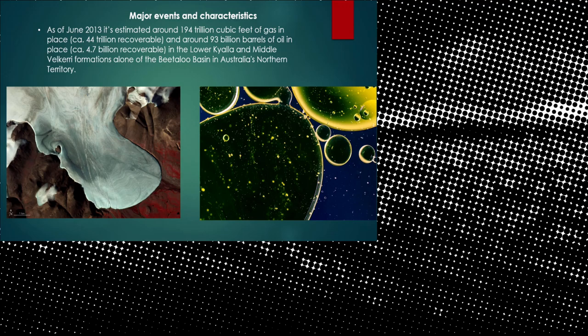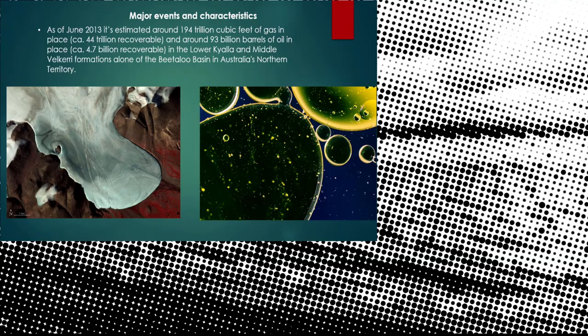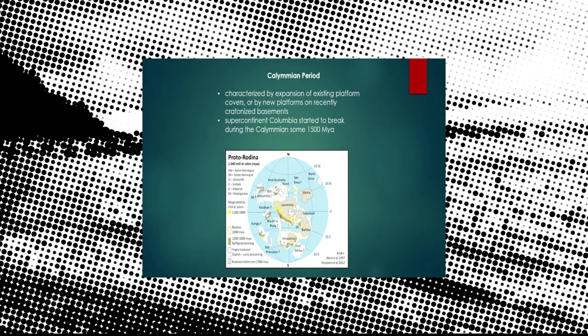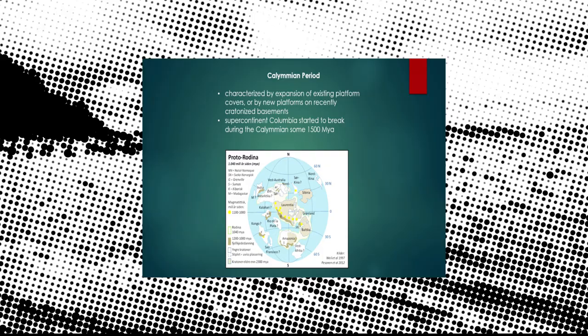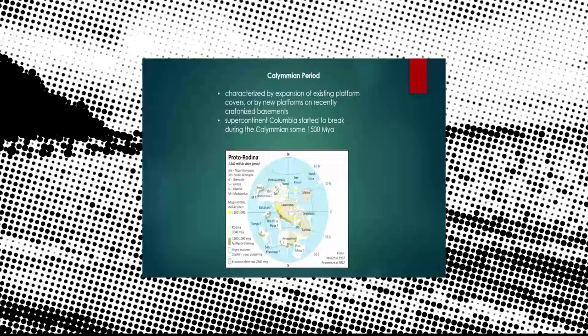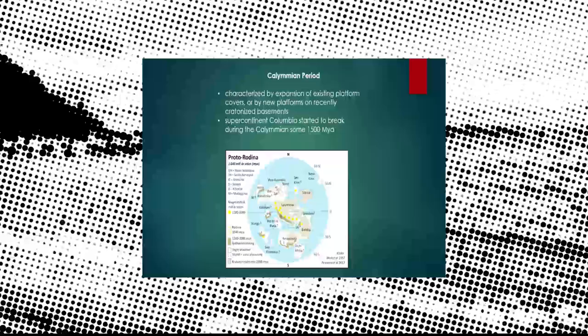There are three periods that reside in the Mesoproterozoic Era. The first one is the Calymmian Period. It's characterized by the expansion of existing platform covers or by new platforms on recently cratonized basements. Supercontinent Columbia started to break up during the Calymmian, and it was about 1500 million years ago.